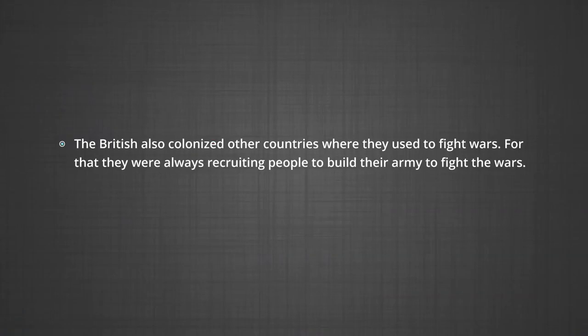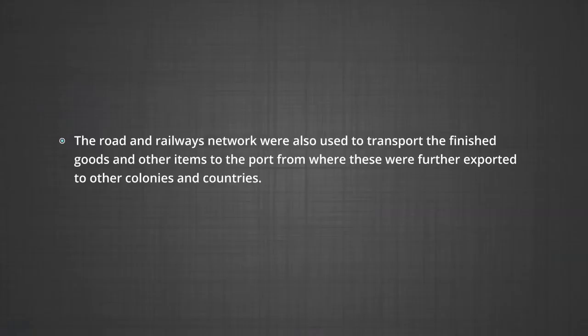Number two: the British also colonized other countries where they used to fight wars. For that, they were always recruiting people to build their army. Hence, it was essential for them to construct road and railway networks to mobilize the army within India. Number three: the road and railways network were also used to transport finished goods and other items to the port for further export to other colonies and countries. This way, the British administration earned lots of foreign exchange.